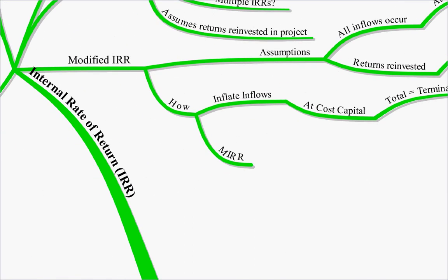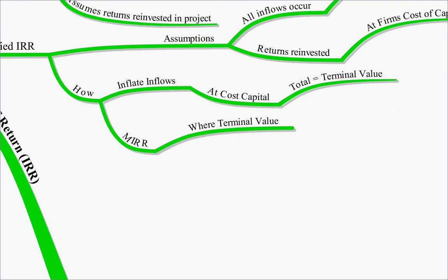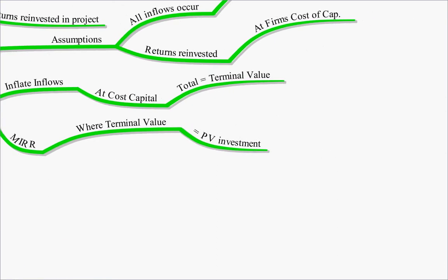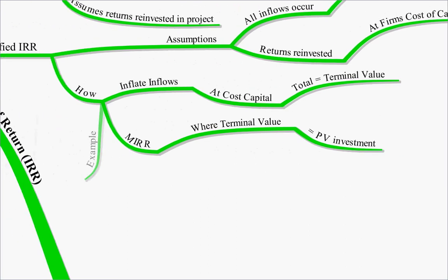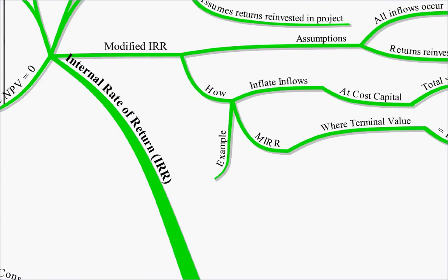We then calculate our modified internal rate of return, because it is where our terminal value, i.e. the value of all our future inflows at the end, equals the present value of our investment now. This becomes more clear when you do an example, and we did one of those in class.